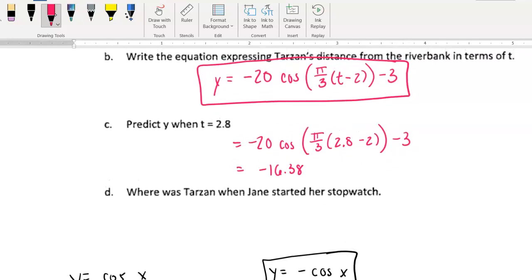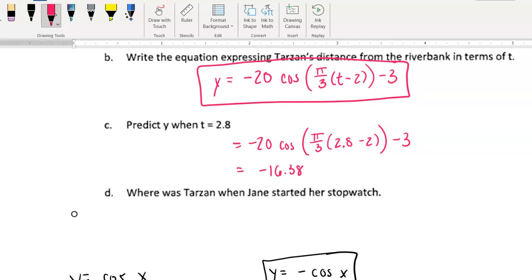And then where was Tarzan when Jane started her stopwatch? So that just refers to after zero seconds have gone by. That's when she first started her stopwatch. So now we're going to put zero in for our time. So zero minus two or just negative two minus three. And if you do that, you end up getting seven. So that means that he would have been seven meters from the riverbank over the water when she first started her stopwatch.